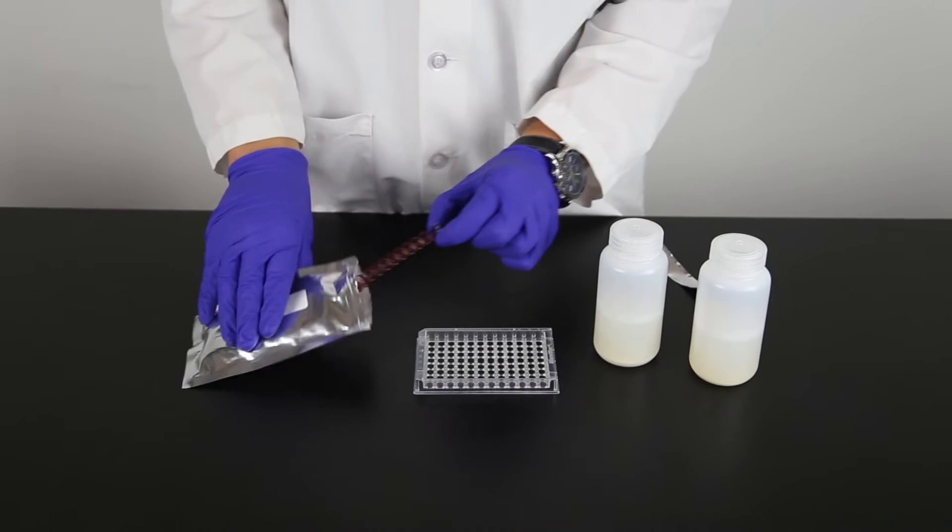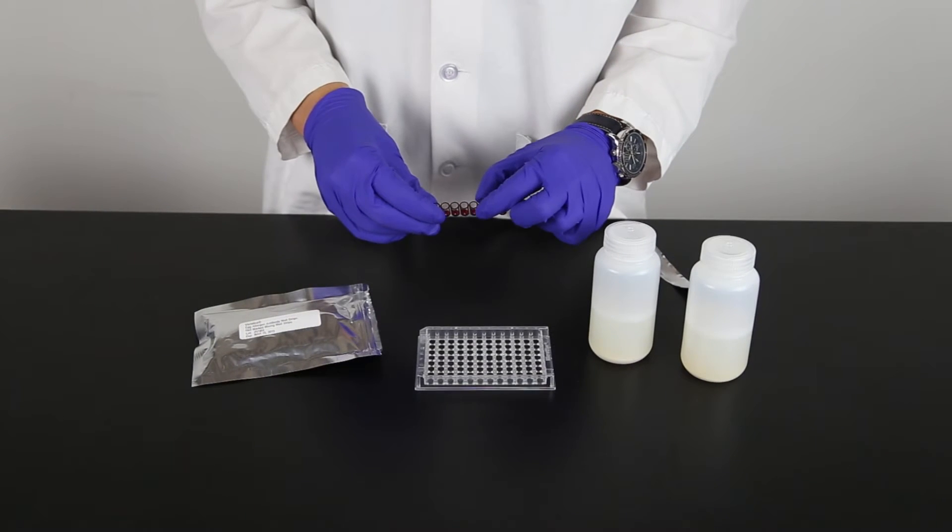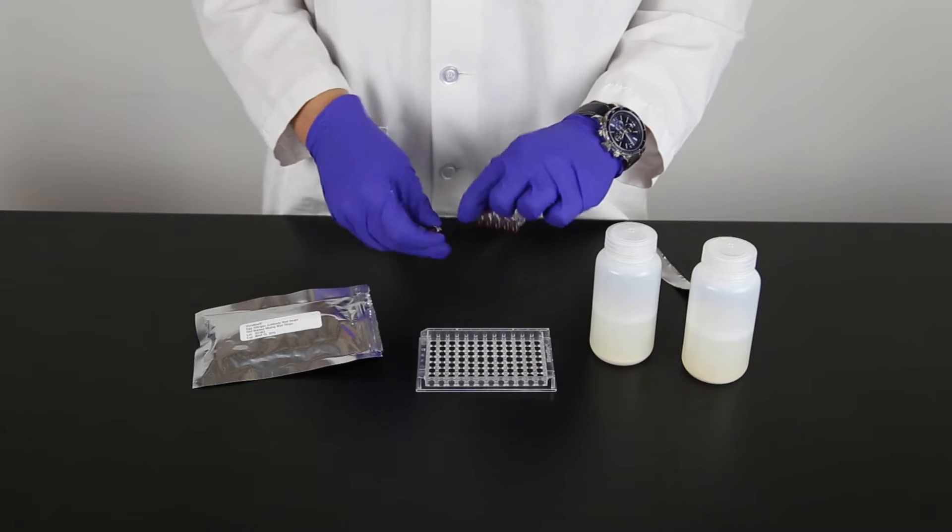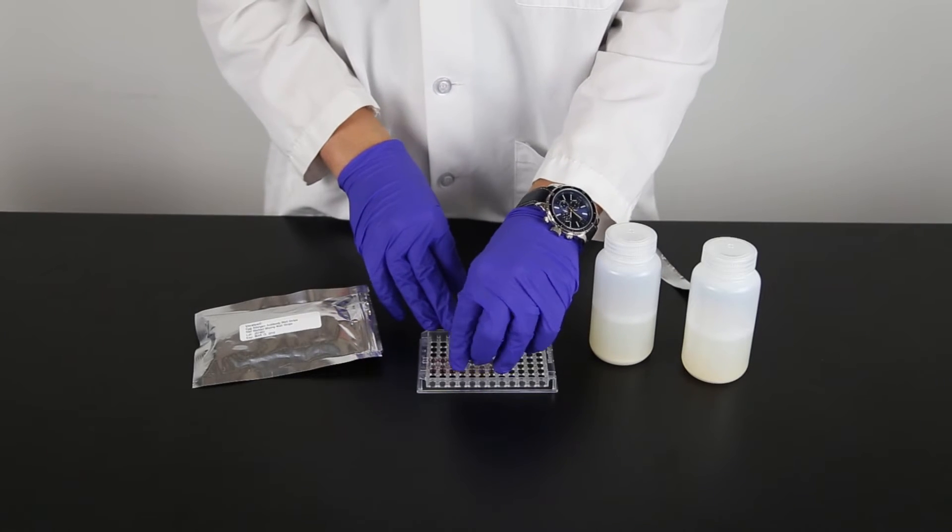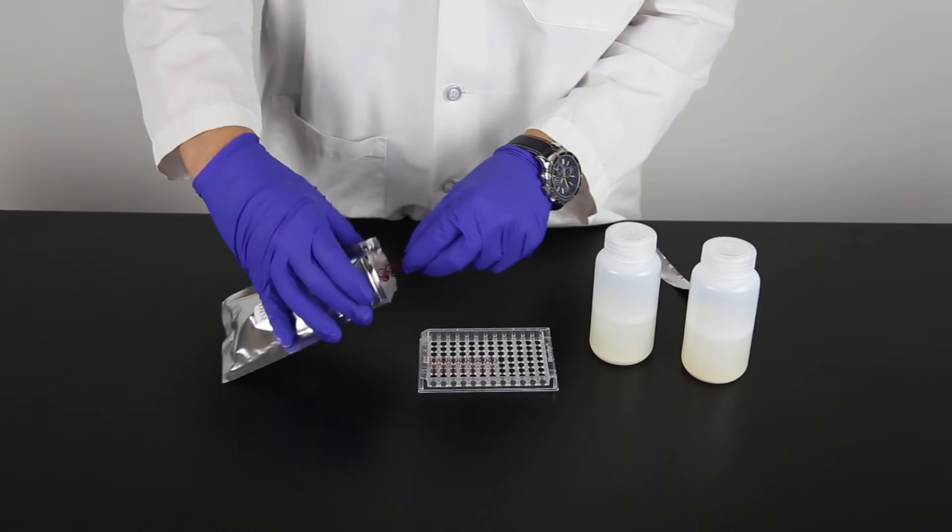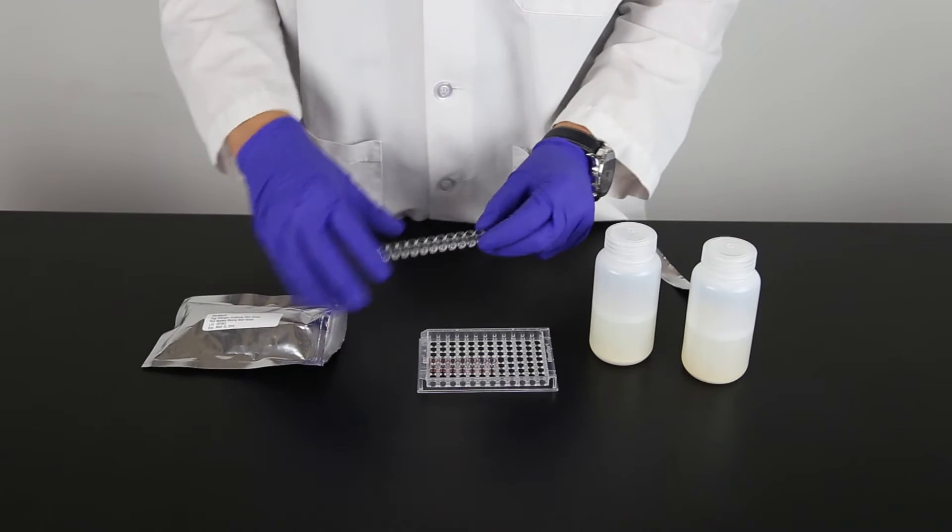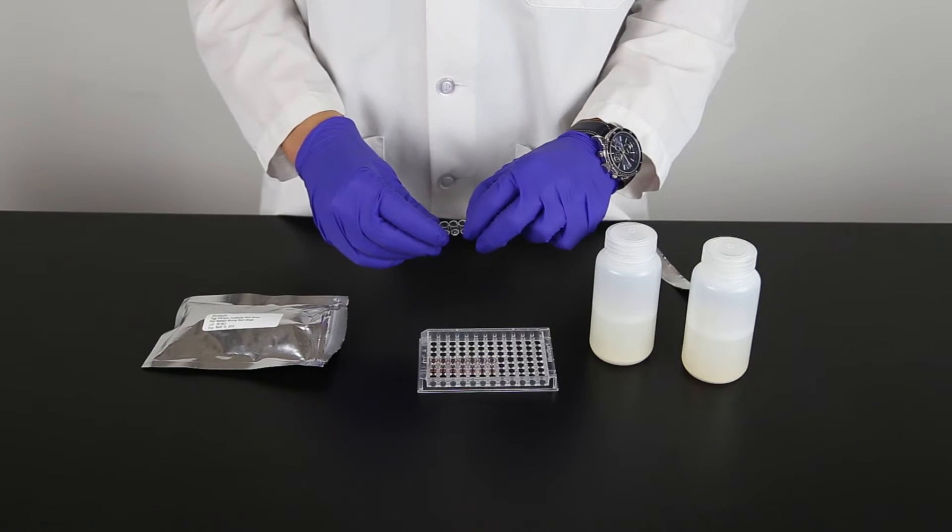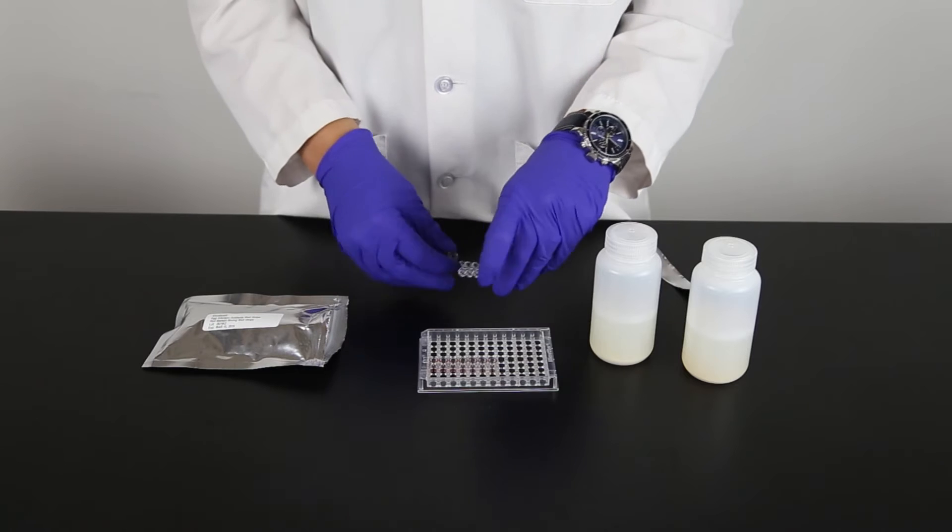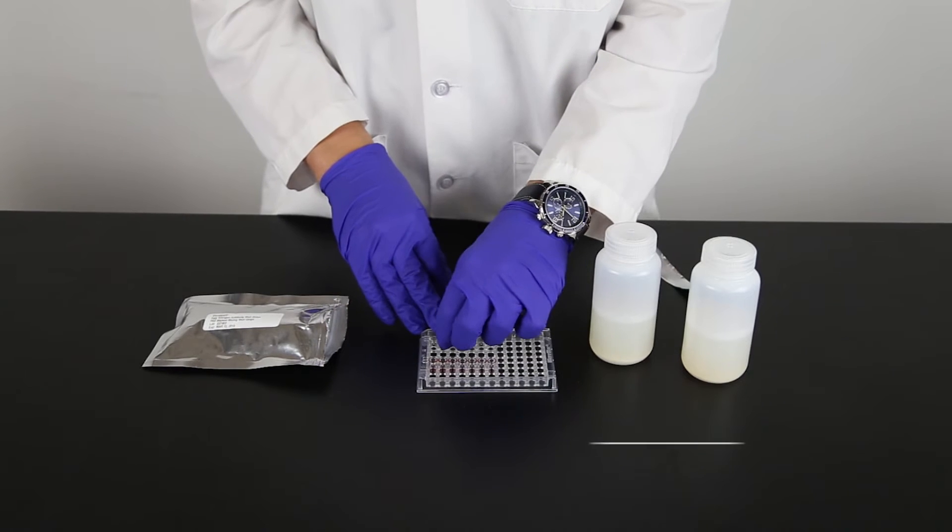Remove one well for each sample to be tested plus one well for each of the controls. For this example, we will have two samples and five controls for a total of seven wells. Break them off and place in the well holder. Do this for both the red marked transfer wells and clear antibody coated wells.